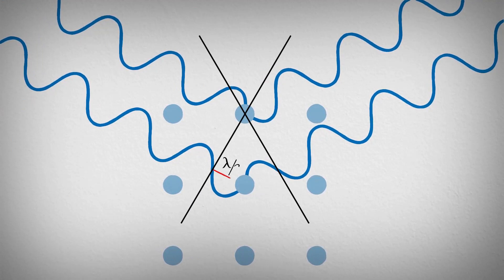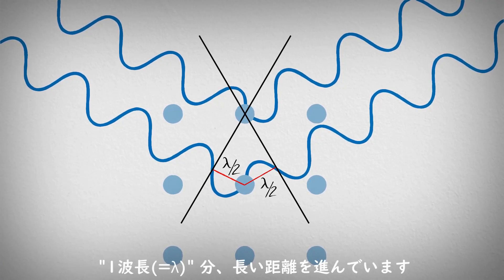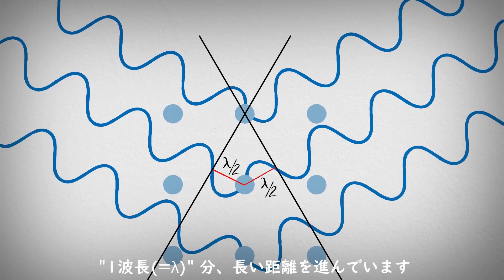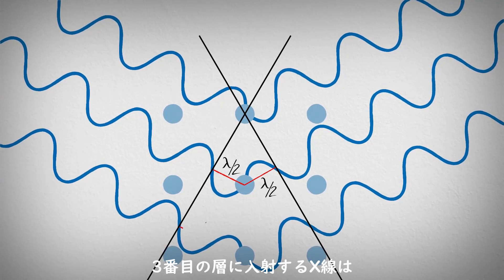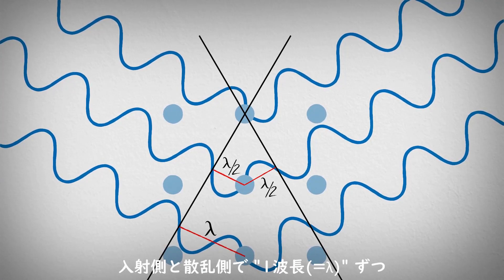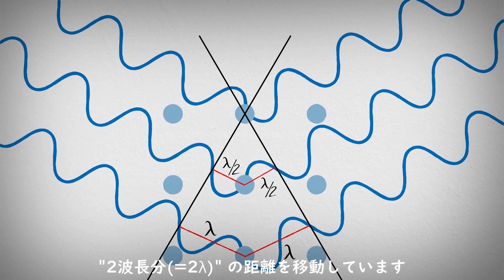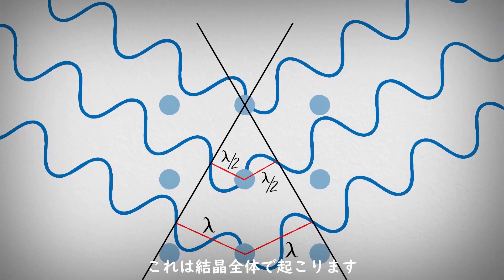In this case, one half of a wavelength is traveled on the incident side, and one half on the scattered side, yielding one additional wavelength. In the case of the next X-ray, one wavelength is traveled on both the incident and the scattered side, resulting in two wavelengths. This reinforcement occurs throughout the crystal.